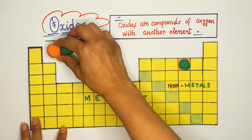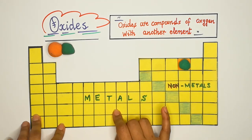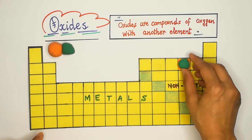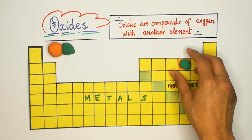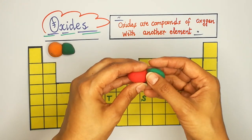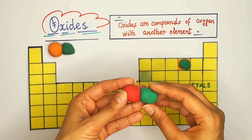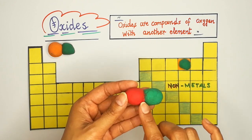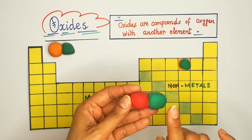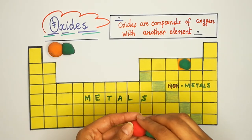Magnesium oxide is a compound of oxygen with a metal. If oxygen combines with one carbon atom — carbon is a non-metal — then we say this is a compound called carbon oxide. If there is one oxygen atom with one carbon, we call it carbon monoxide.